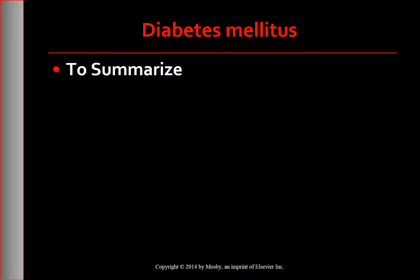To summarize, diabetes mellitus is a chronic multi-system disorder of glucose metabolism related to absent or insufficient insulin, impaired utilization of insulin, or both. There are four main types or classes of diabetes, but type 1 and type 2 are the most important. In type 1 diabetes, there is absolutely no insulin production. In type 2, insulin is reduced but the body is not able to utilize it properly, or there is insufficient insulin. Pre-diabetes is when blood glucose levels are higher than normal but not high enough to give the diagnosis of diabetes.